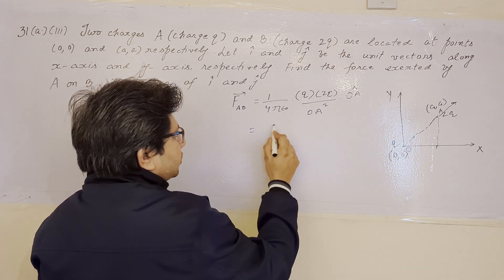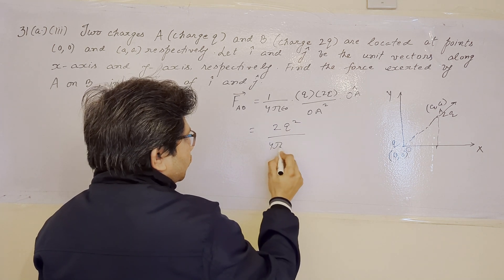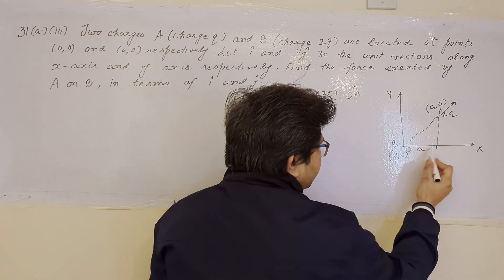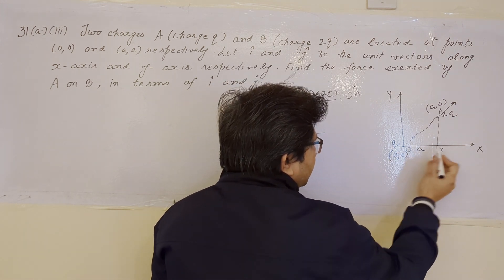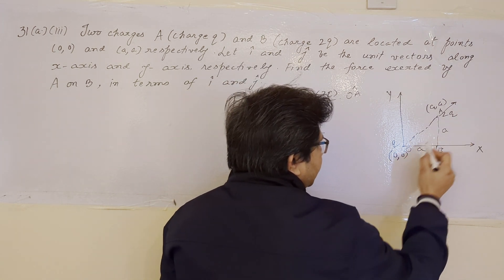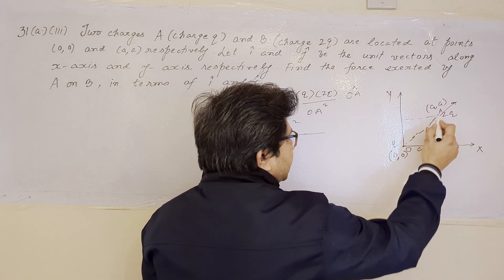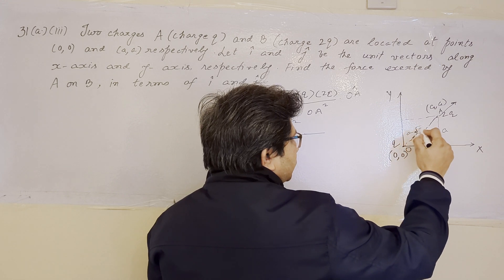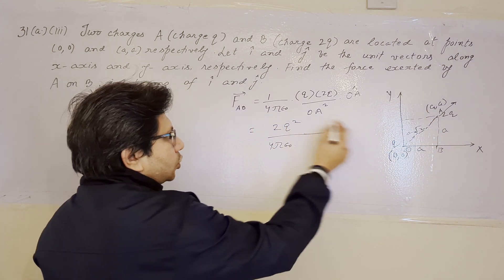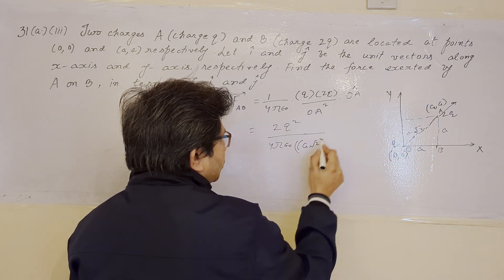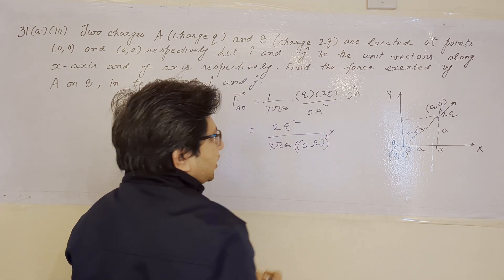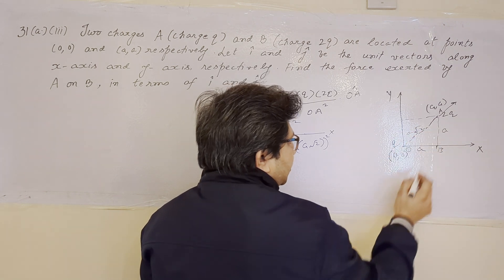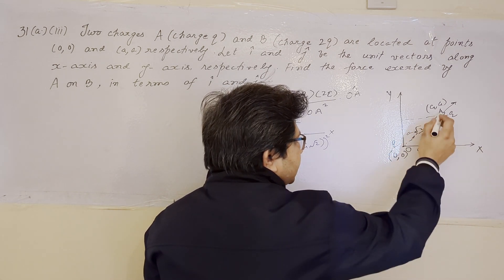This gives 2q² divided by 4πε₀ times OA squared. The x-distance OB is a and the y-distance BA is also a, forming a right triangle. The diagonal OA is therefore a√2. So OA squared equals (a√2)² = 2a².